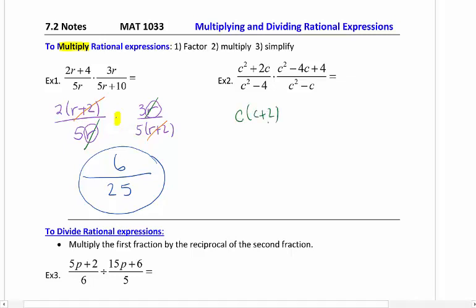So I'm going to start off by factoring out a GCF in the numerator. Denominator is a difference of squares. The numerator of the second rational expression is actually a perfect square, c minus 2, c minus 2. And be careful on this denominator. You see c squared, and a lot of y'all want to jump to a difference of squares, but this problem actually is just a GCF. So you can pull out a c, and you're left with a c minus 1.